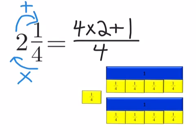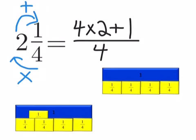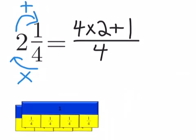So four times two plus one and that obviously makes nine. And nine what? Nine fourths. Two and one fourth equals nine fourths.